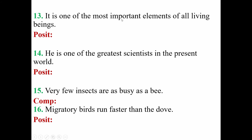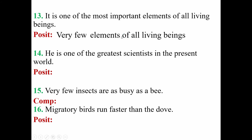Number thirteen: 'It is one of the most important elements of all living beings.' This is a sentence of superlative degree — make it positive. As we find 'one of the,' start the sentence with 'very few.' The next part of the adjective: 'elements of all living beings.' After 'very few,' use plural number and plural verb. The verb 'is' changes to 'are.' Write 'as important as,' then the given subject 'it.'